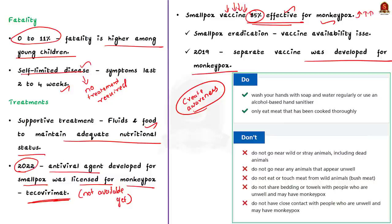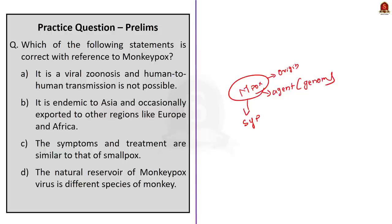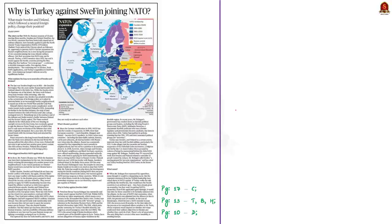You can follow specific do's and don'ts to prevent getting infected. As of today, the infection has not yet been reported in India. That's all regarding monkeypox. In this discussion, we covered the basics of monkeypox — its origin, causative agent, genetic material, symptoms, and modes of transmission. These points are all important for exams, so note them down and revise constantly.